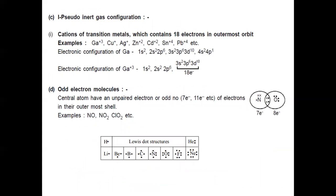Pseudo-inert gas configuration: cations of transition metals contain 18 electrons in their outermost orbit, giving a pseudo-inert gas configuration. Examples include Ga³⁺, Cu⁺, Ag⁺, Zn²⁺, Cd²⁺, Sn⁴⁺. Odd electron molecules: the central atom has an unpaired or odd number of electrons, for example NO, NO₂, and ClO₂, where the central atoms nitrogen and chlorine have unpaired electrons and do not achieve eight electrons in the outermost shell.